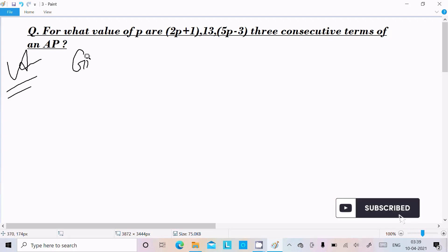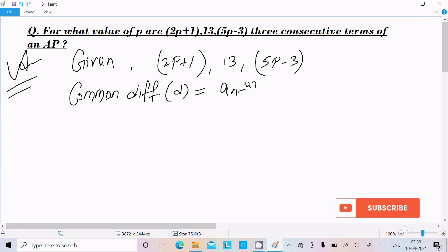So right here, given AP: first is 2p plus 1, next 13, here 5p minus 3. So these are APs. So we know the common difference formula. Common difference formula d is an minus an-1, here n should be greater than 1.